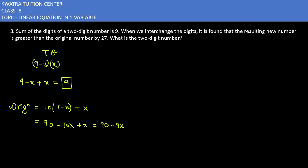Because here we have 9 minus x in the tens place. When we expand it, the ones place is just x. So this is the original number.